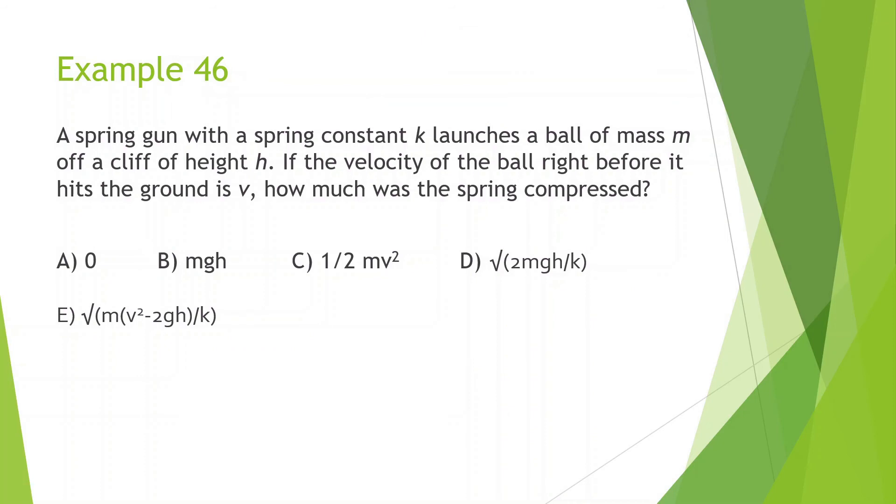A spring gun with a spring constant K launches a ball of mass M off a cliff of height H. If the velocity of the ball right before it hits the ground is V, how much was the spring compressed? So let's look at this. The spring can be oriented in any way, but let's say it's oriented like this. So this is the ball. It launches this thing. It falls. Over here, it has a speed of V. So let's think about this. Mechanical energy initial equals mechanical energy final. We know at the very beginning, there's going to be elastic potential energy, one-half KX squared. And there's also going to be a gravitational potential energy. It has a height H. Plus MGH is equal to, and at the end, there's only going to be kinetic energy, one-half MV squared.